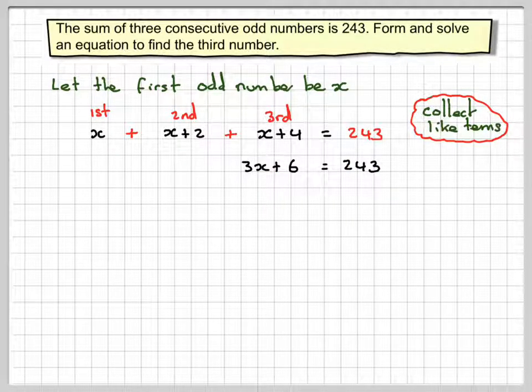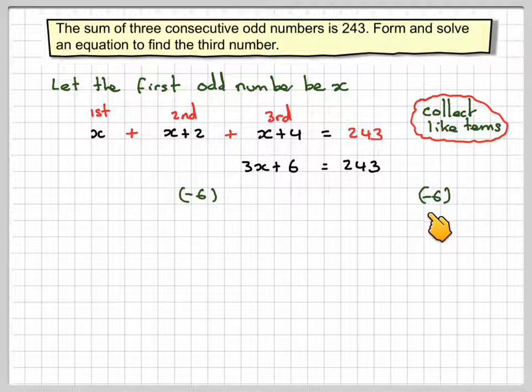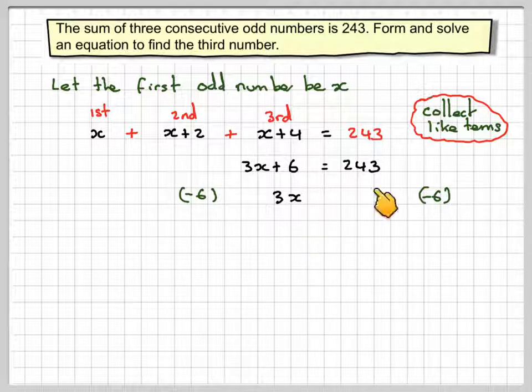Now I need to solve it. So we've got plus 6 here. The opposite of plus 6 is to take 6. So this side we get 3x, and then if you take 6 from 243, you get 237.